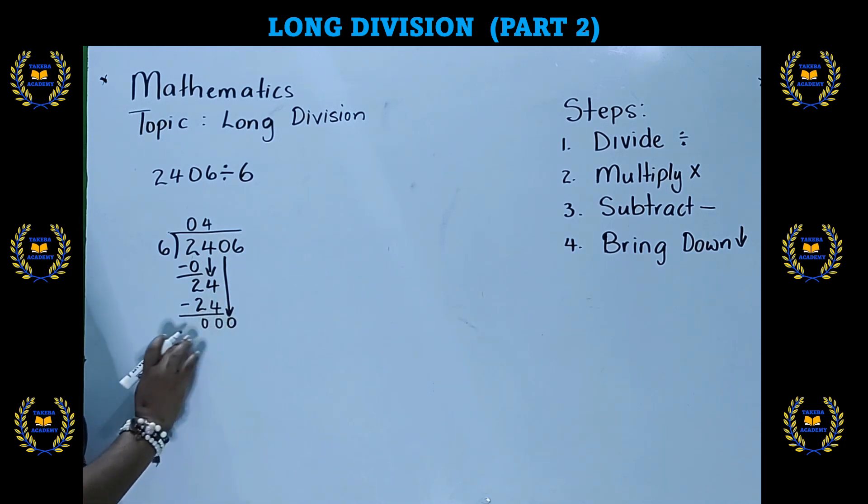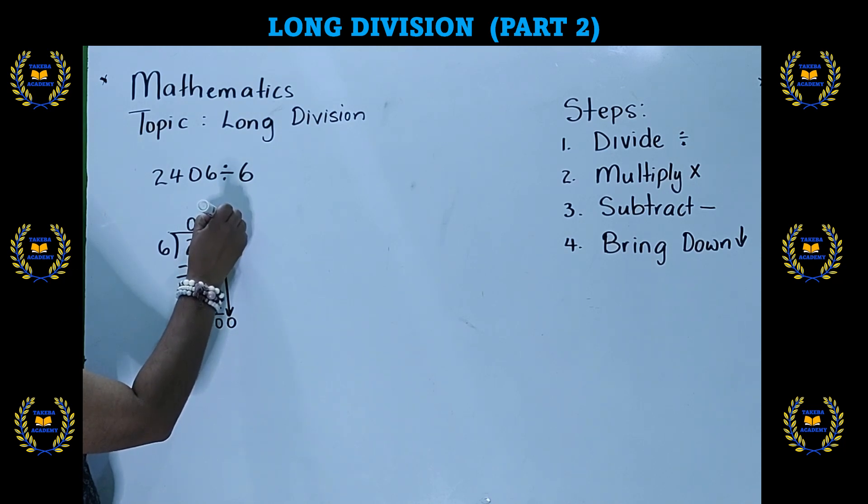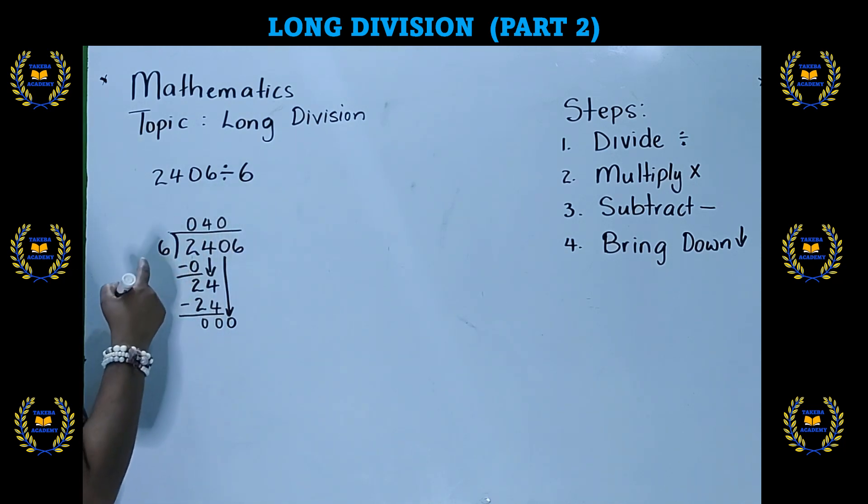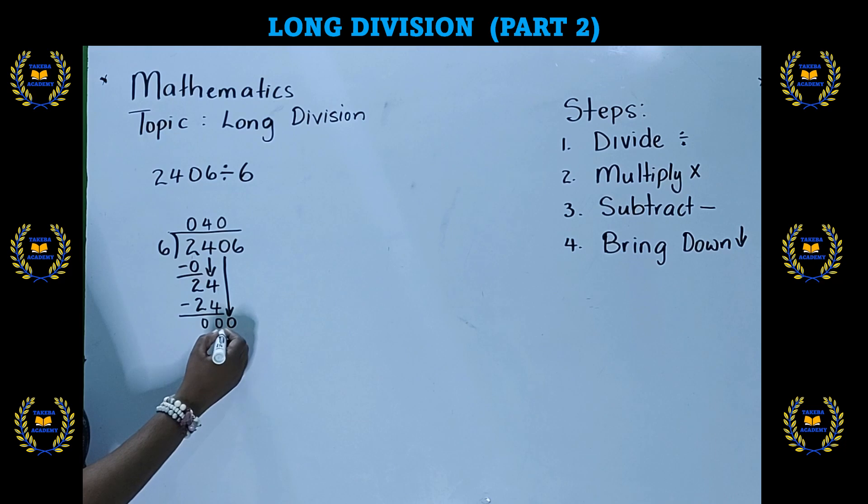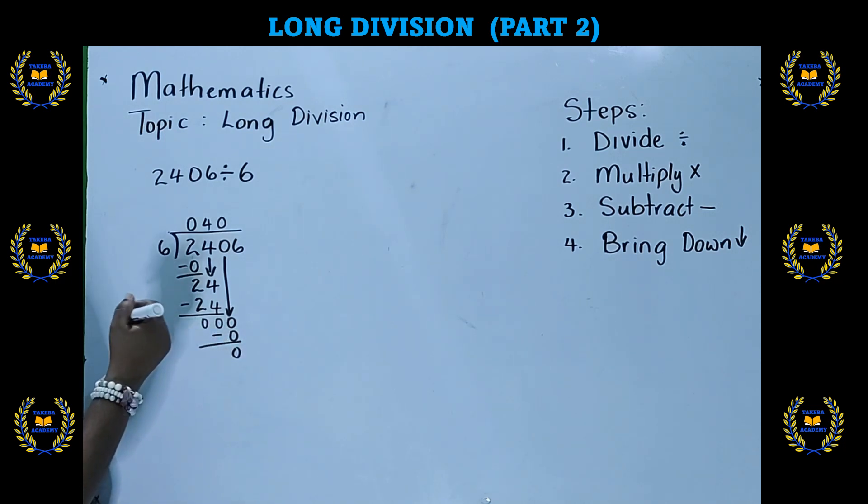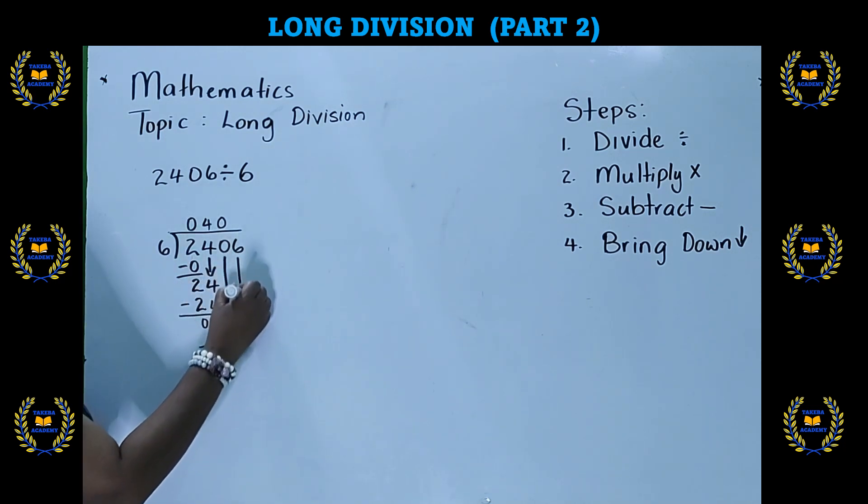And again, make sure you pay attention to where the number goes when you bring the number down. It goes just in line with your subtraction. So now we have 0 divided by 6. Again, we multiply 6 times 0 is 0. Then we subtract, and the answer is 0. Then step 4, we bring down.